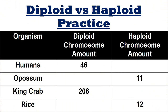Let's do a little practice. Starting with humans: the diploid is 46 and we need to find how many haploid chromosomes there are. To go from diploid to haploid, we divide by two. So 46 divided by two equals 23.